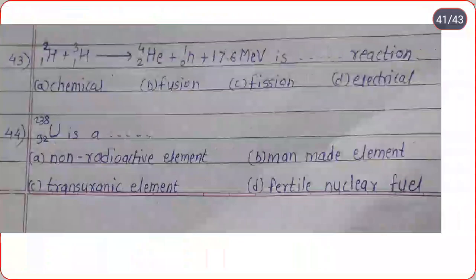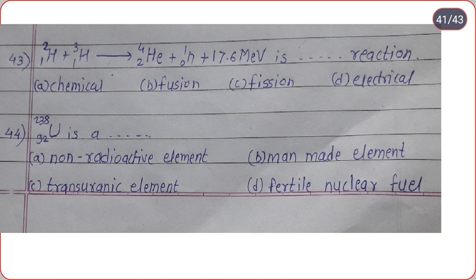The next: H-1-2 (deuterium) plus tritium gives helium plus neutron plus 17.6 million electron volt. This is a dot-dot reaction. Options are chemical reaction, fission reaction, fusion reaction, electrical reaction. Correct option is fusion reaction.